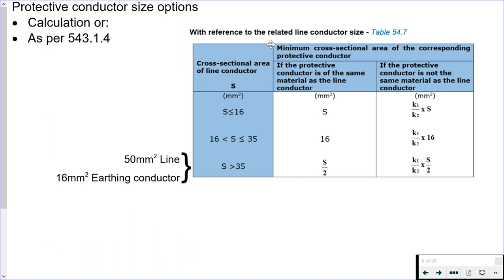Our protective conductor is selected in relation to the size of the line conductor. We have a 50 millimeter squared line conductor with a 16 millimeter squared earthing conductor. The table says if your line conductor is greater than 35 millimeters squared, then your protective conductor, if it's of the same material, has to be at least half of the line conductor size.